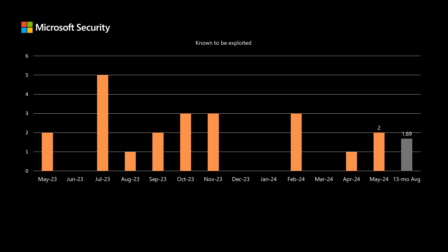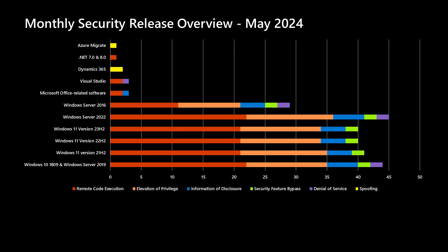That's just a little bit above our average of around 1.7 over the past year. Now let's look at the overview. Those of you familiar with this chart will recognize that we put the Windows products towards the bottom, and as we move up the chart we get into products that we don't necessarily service every single month. For our Windows products, we've been averaging mid-30s to mid-40s depending on the specific operating system, and this month we're right in line with that average.